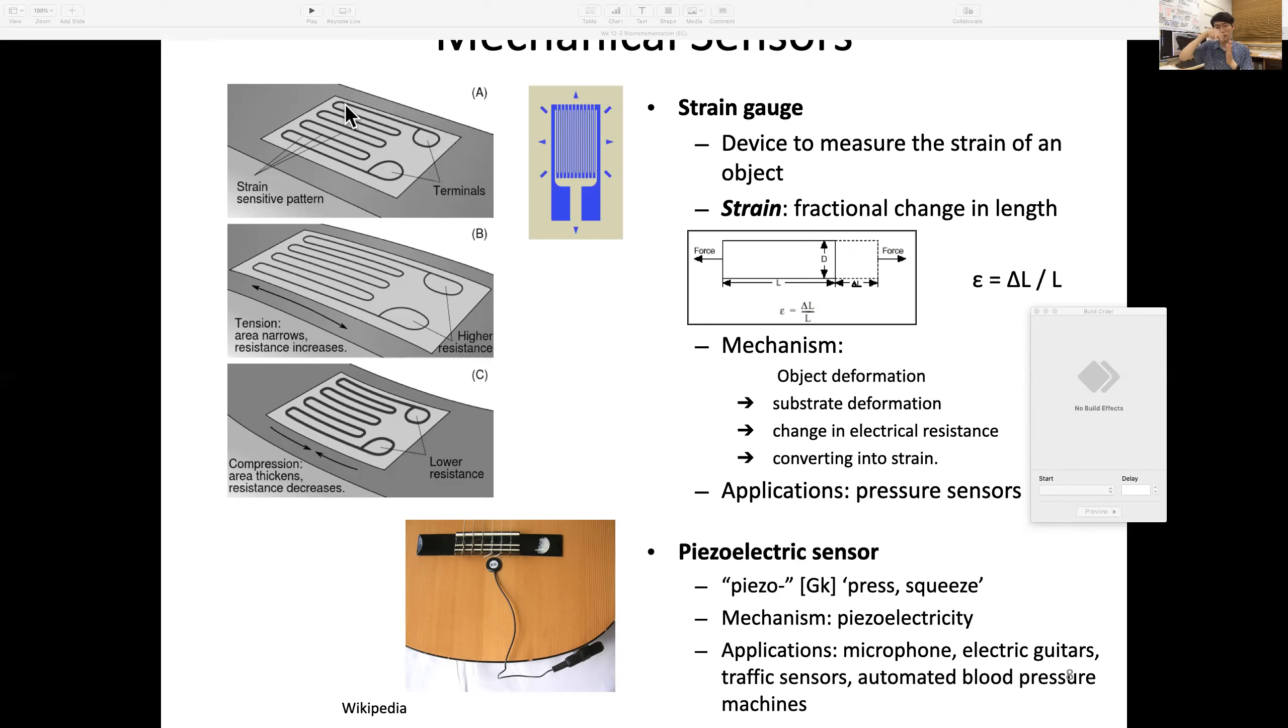In this case, you see directional change—that's directional strain we're measuring. When there's tension, it elongates, so the cross-sectional area narrows down, meaning electrical resistance goes up.